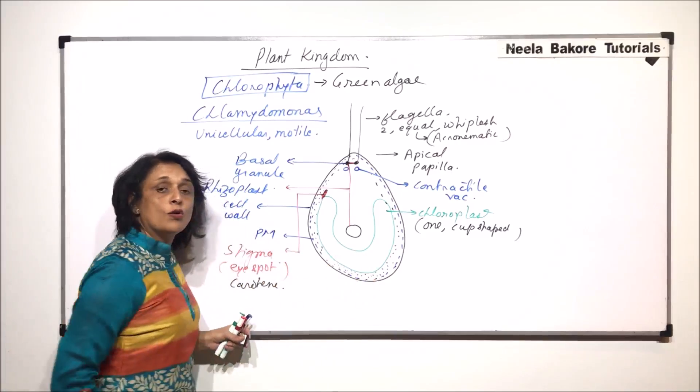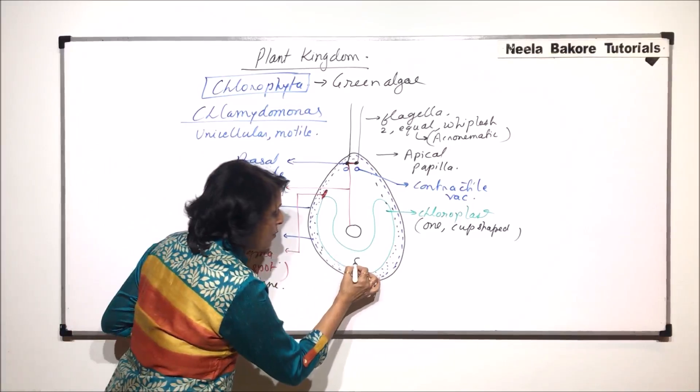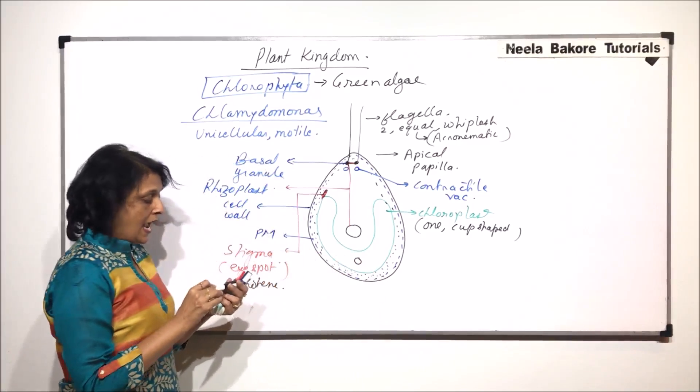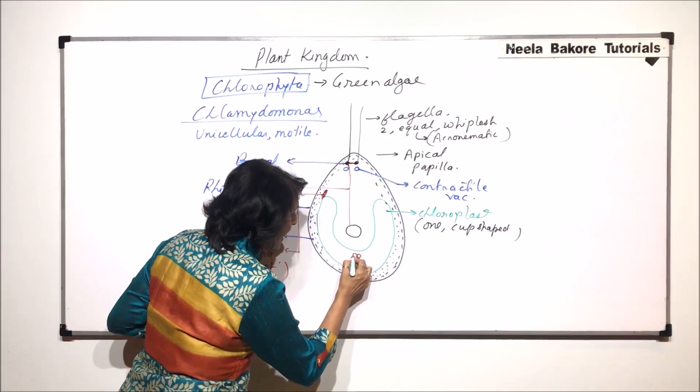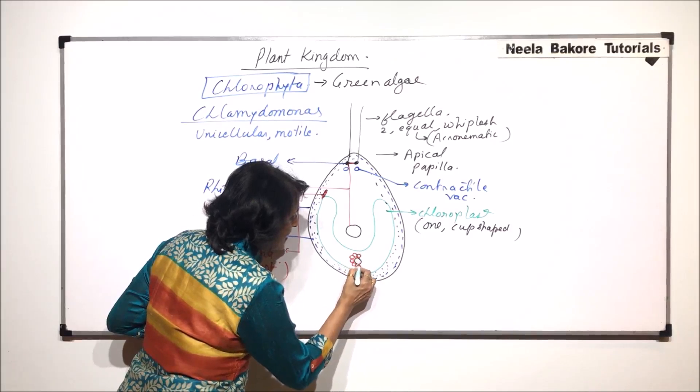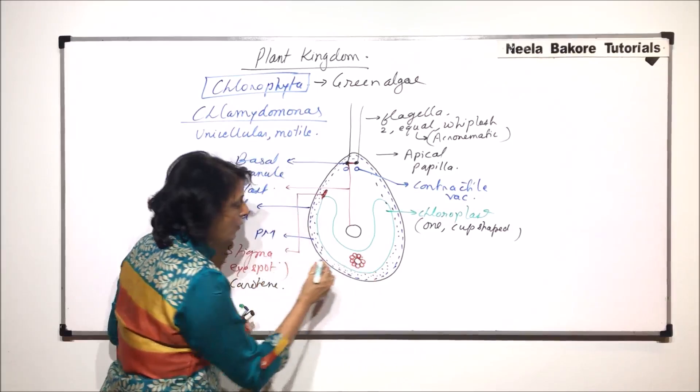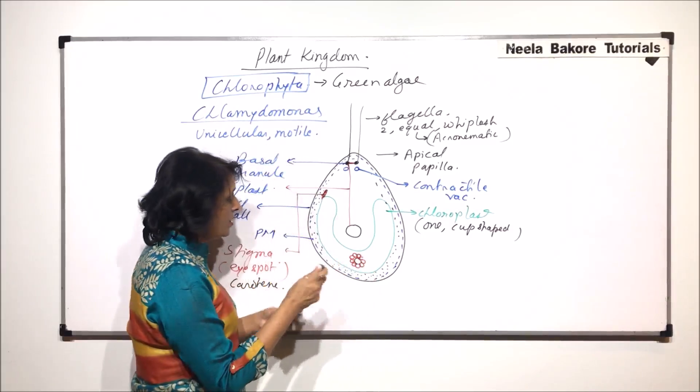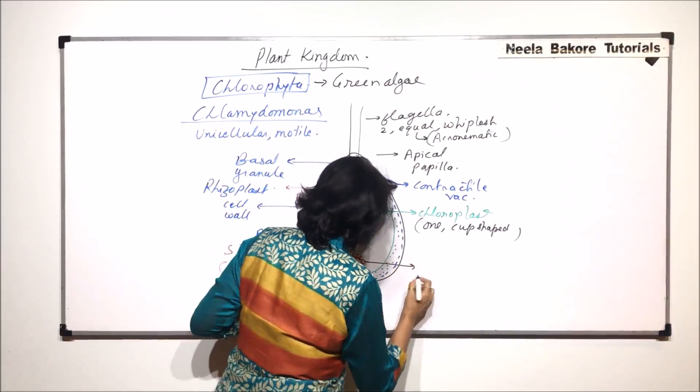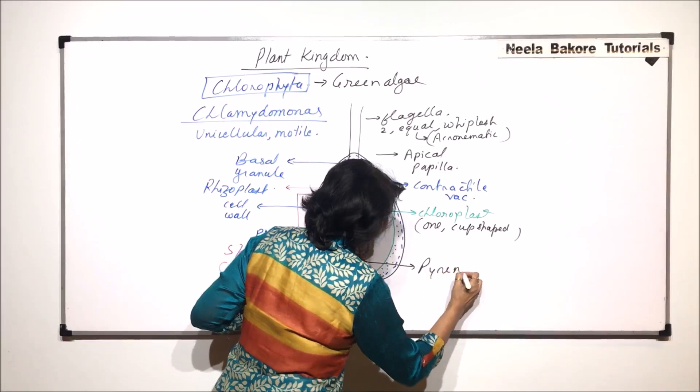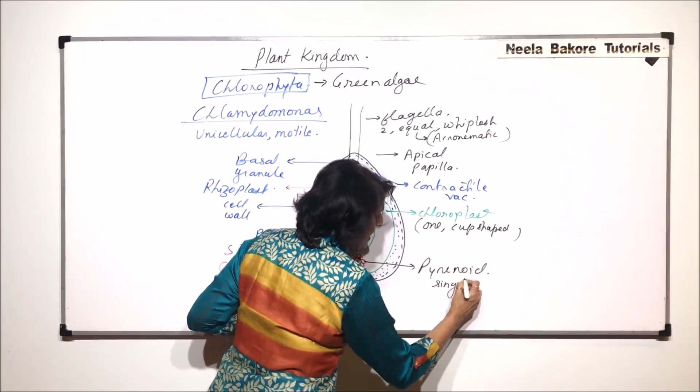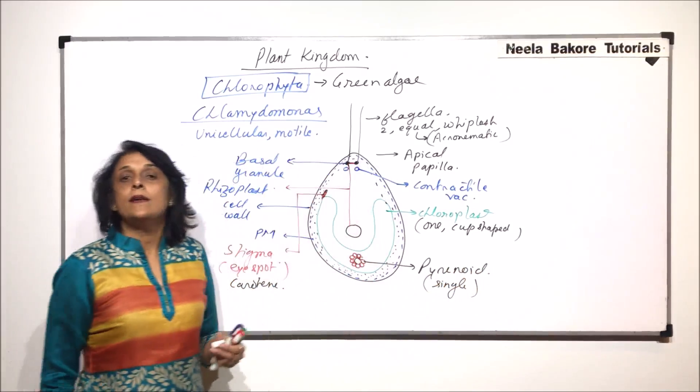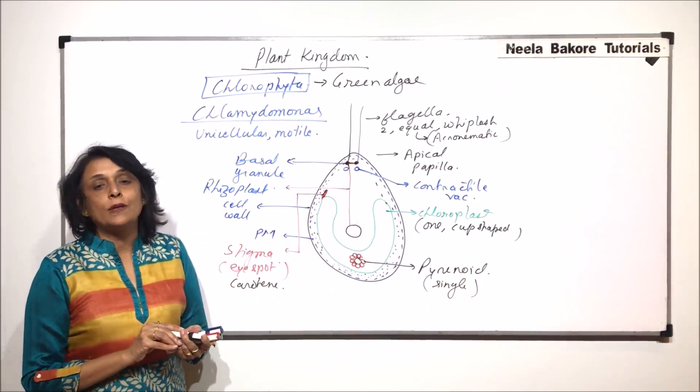In this chloroplast is embedded one pyrenoid. Pyrenoid has the core of protein and there are starch grains around it. In case of Chlamidomonas there is a single pyrenoid. Very rarely there would be more than one.